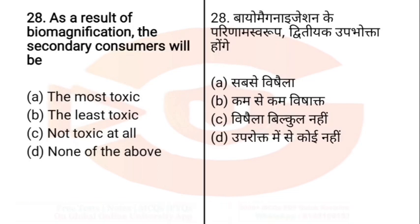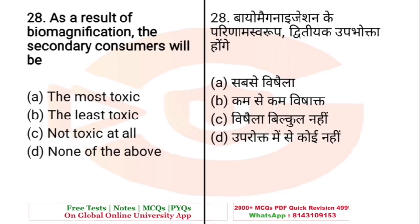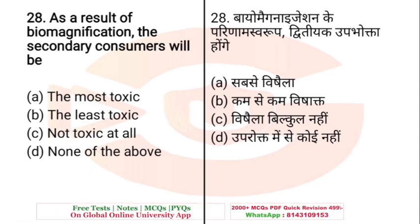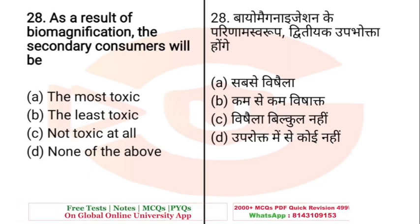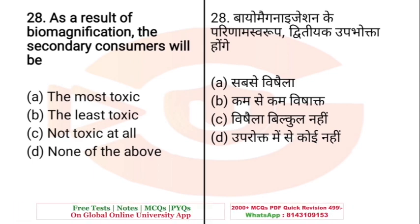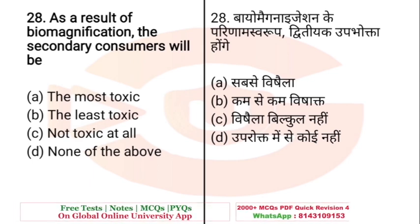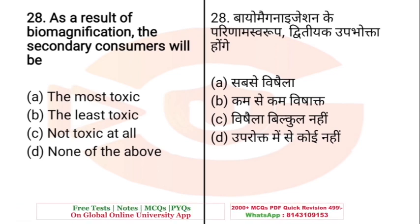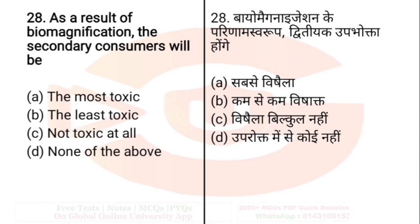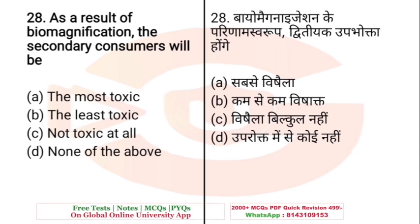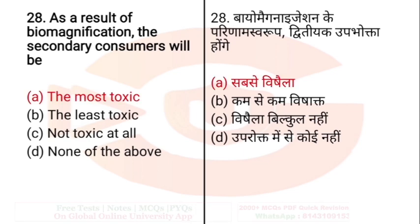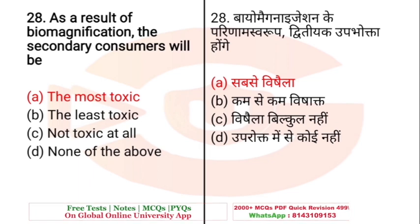Question: As a result of biomagnification, the secondary consumers will be — A. The most toxic, B. The least toxic, C. Not toxic at all, D. None of the above. The right answer is A — the most toxic, i.e., the most poisonous.